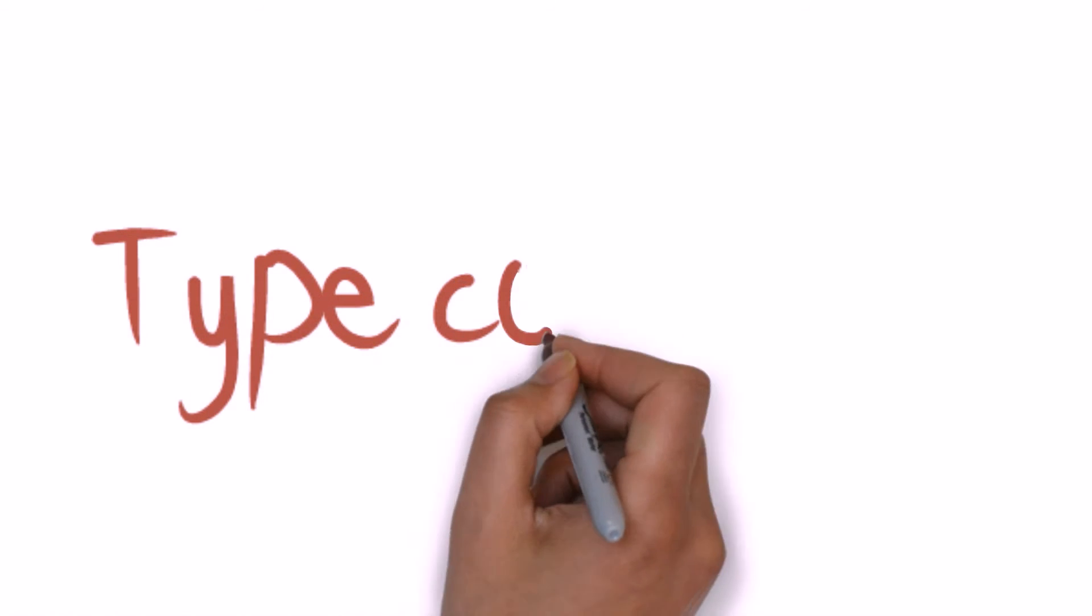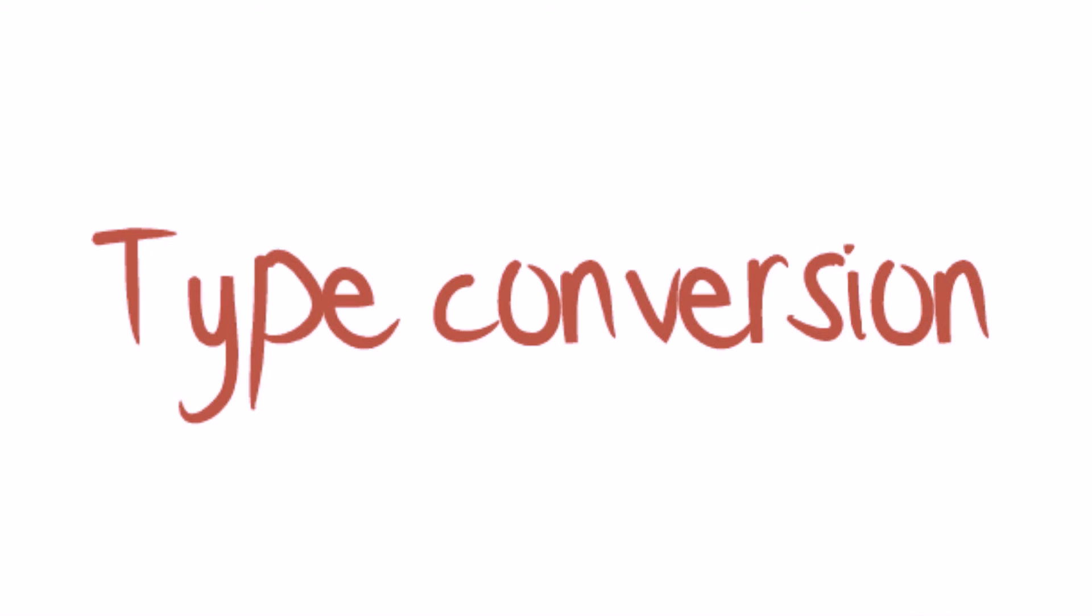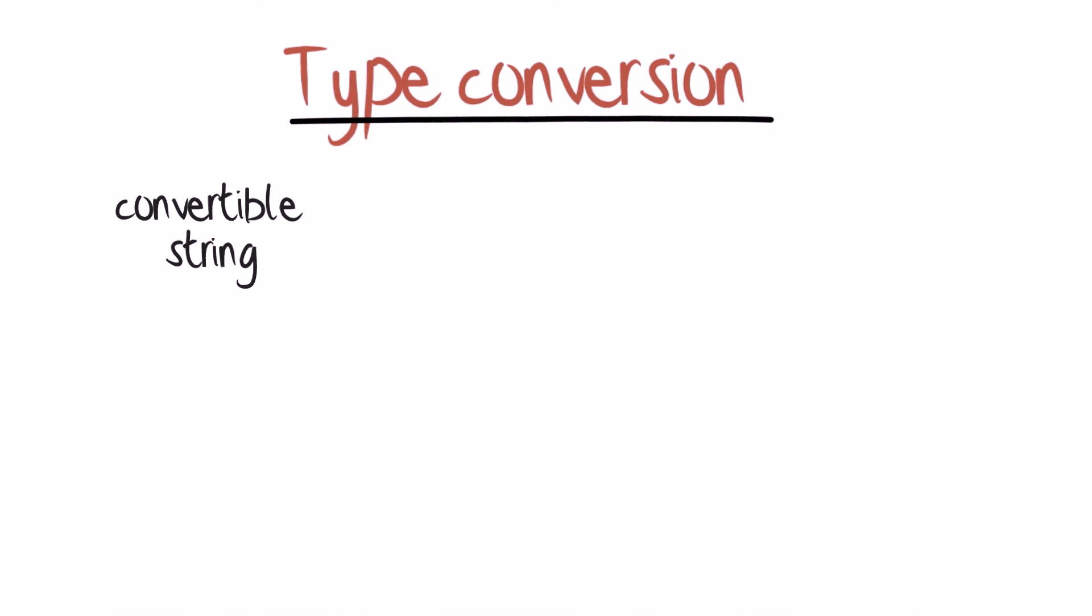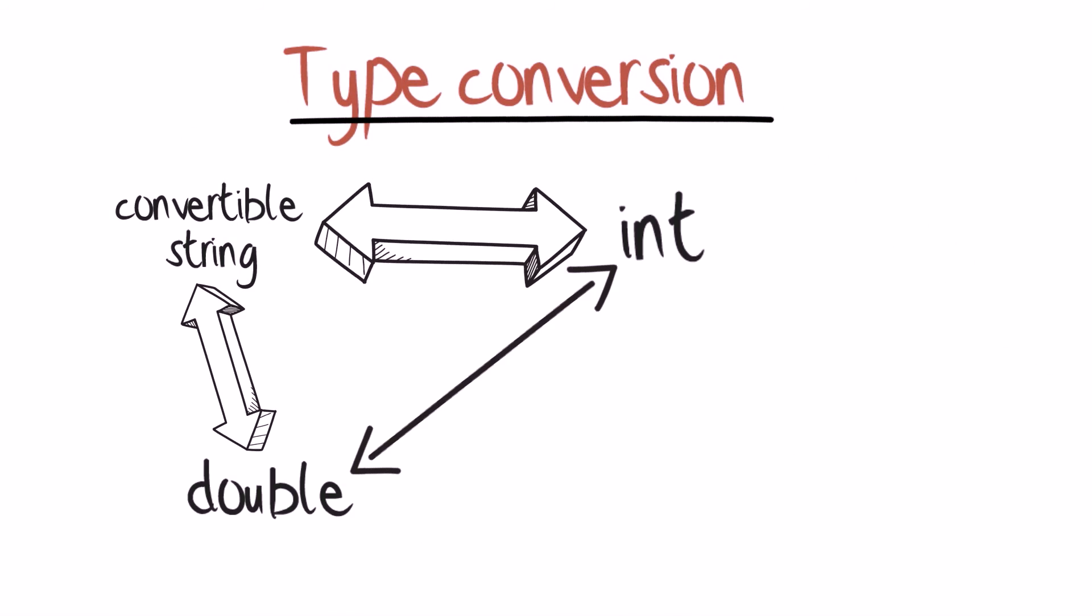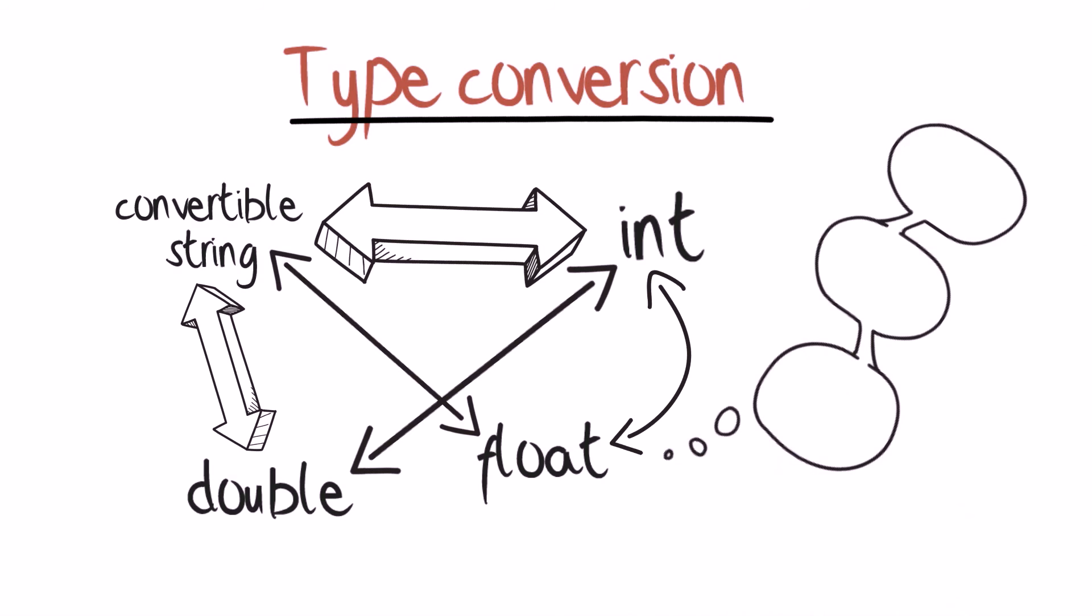One of the most common uses of the wrapper classes every Java programmer out there has probably used is type conversion. The only way strings can be converted to int and vice versa, provided the string is convertible, is by using wrapper classes.